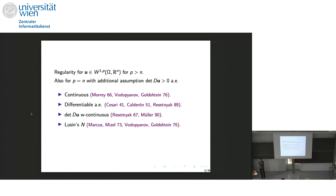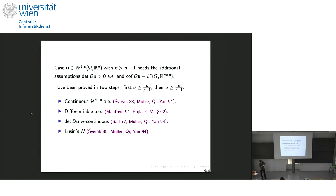The deformation satisfies Lusin's condition: sets of measure zero go to sets of measure zero, so matter is not created. We can lower the exponent to p greater than n minus one if we make the additional assumption that the cofactor is sufficiently integrable. In that case, the deformations are continuous except on a very small set, differentiable almost everywhere, and the determinant is continuous. The exponents p and q are optimal.